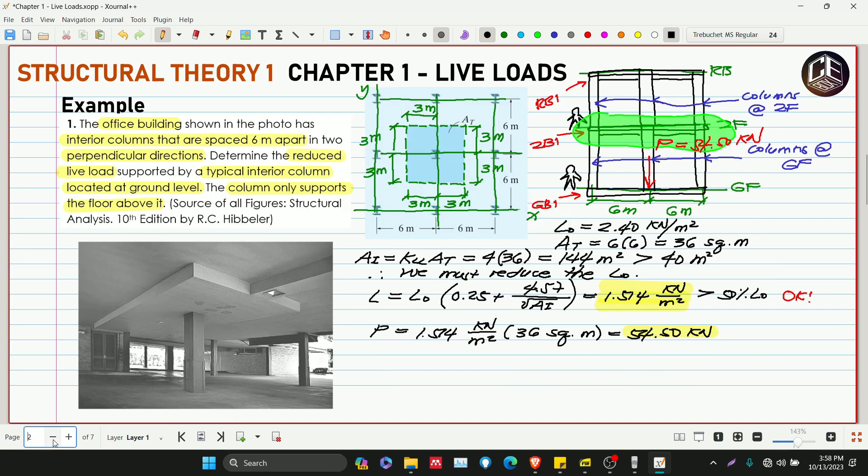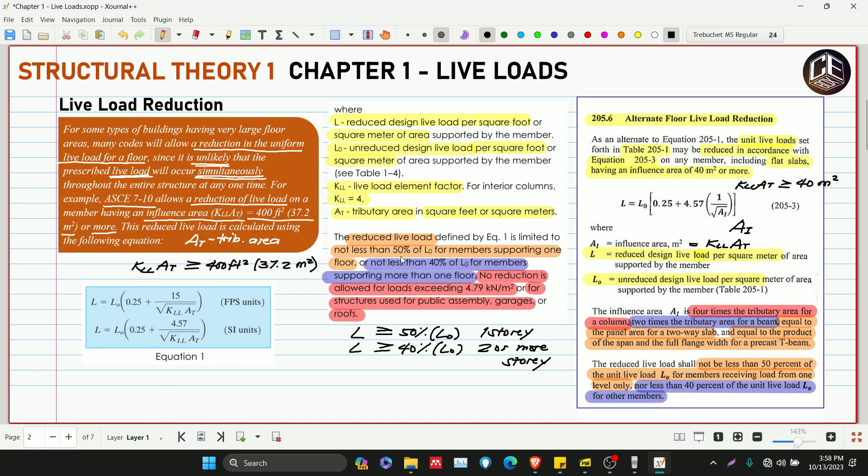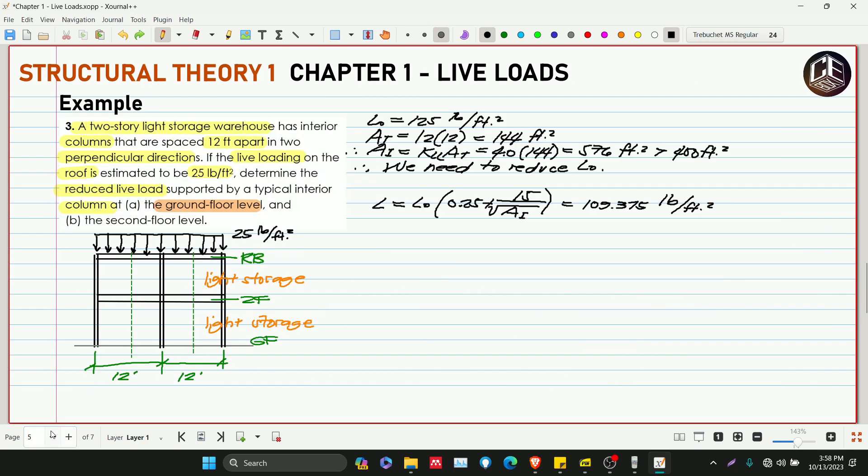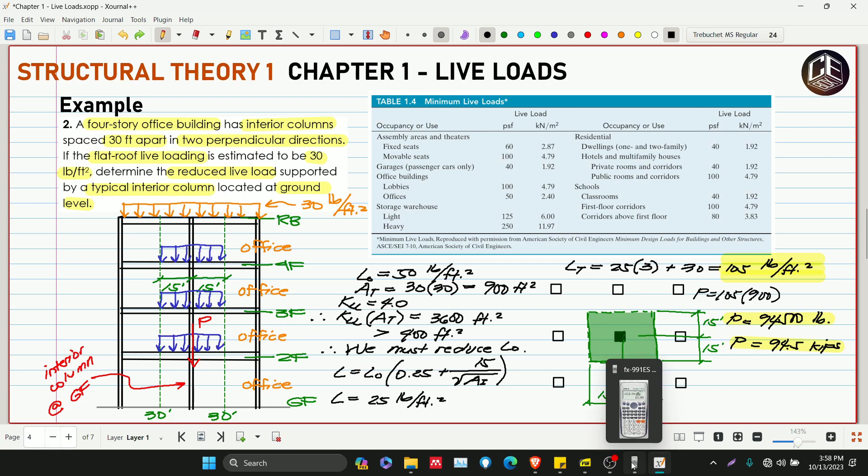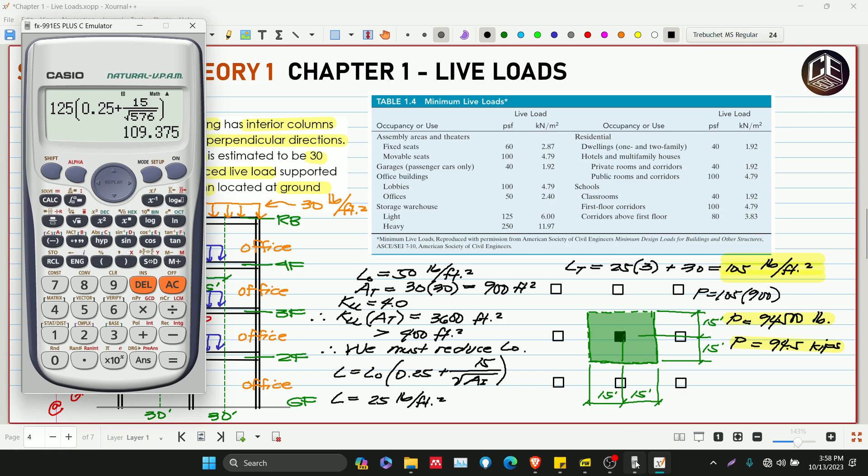Sabi rin sa code na check na, dapat daw ang ating reduced live load is greater than or equivalent to 40% dun sa two or more story building. So ito sa ating problem number 2, 4 levels yan. So 0.4 of 125, so 50.